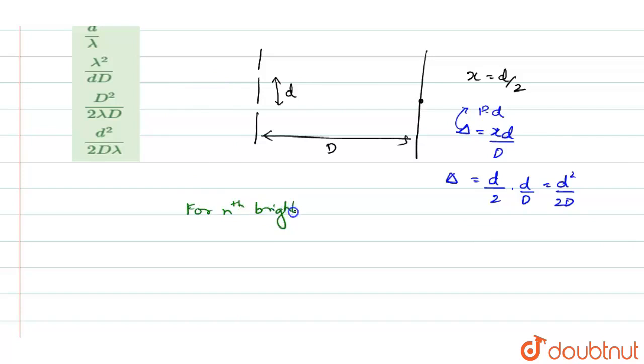what will be the path difference for nth bright fringe? Delta will be equal to n lambda. So, we will substitute for n lambda, so that n lambda will be equal to D square by 2D.